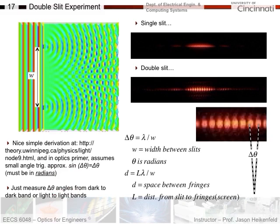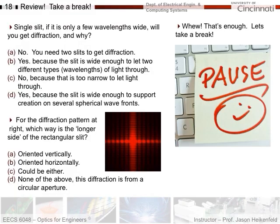And again, this week, you just measure delta theta angles from dark band or to light bands, and that'll help you predict the width between the slits using this formula here. So at that point, take another break, and first go through some of this review, including this question, which I gave you everything you need for at this point to be able to answer.